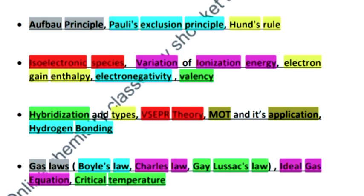Then variation of ionization energy, electron gain enthalpy, electronegativity and valency. This will be very important in period and group.